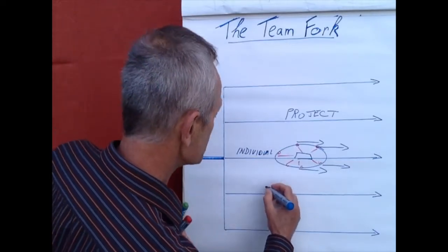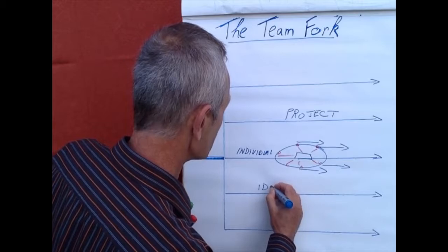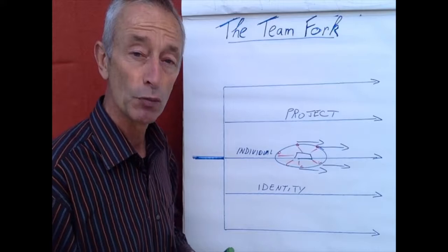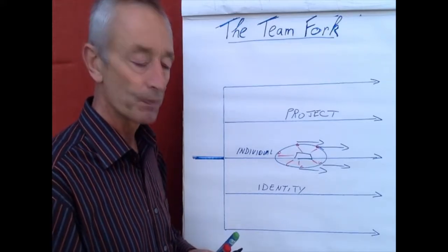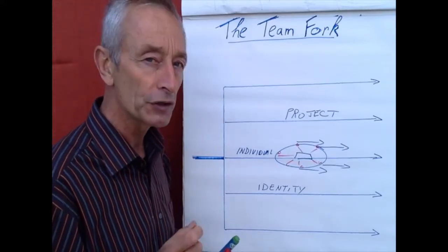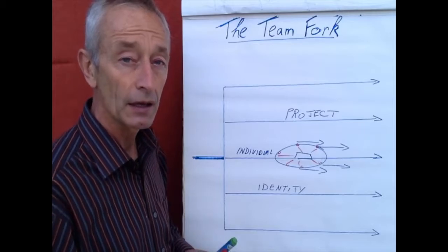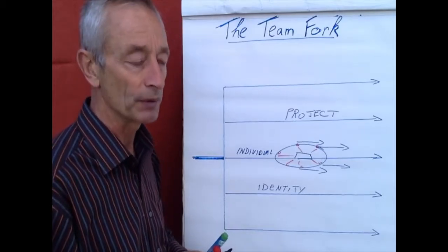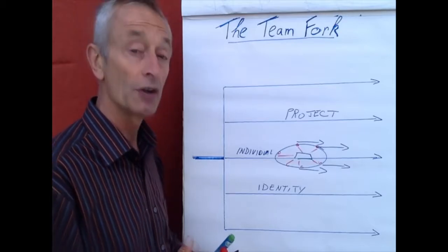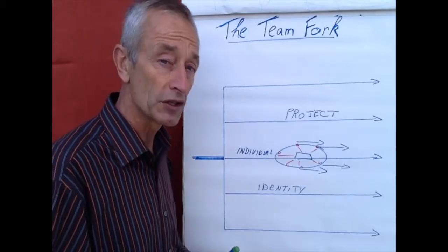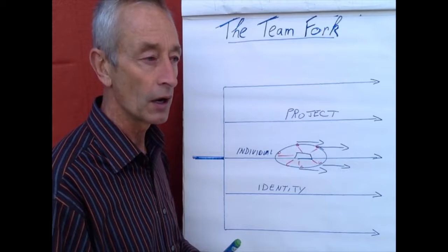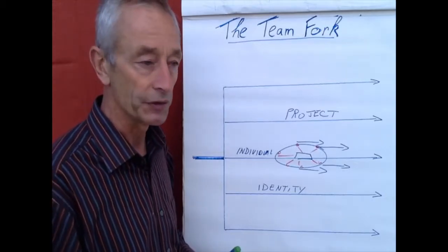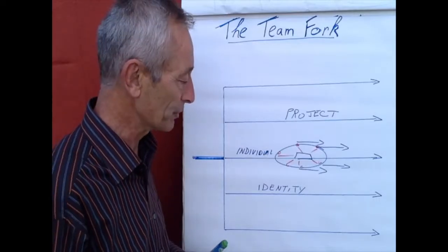Besides individuals, there is the group identity. When I ask who are you as a group, often groups refer to their functional definition. They refer to the organizational shard for example. They say we are the R&D team or we are the sales team, or we are 4.0 team because they are working on the fourth floor for example.